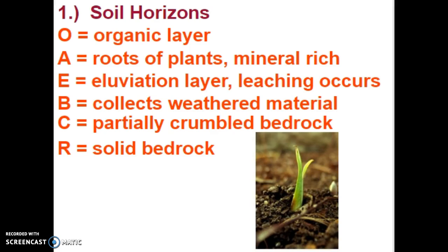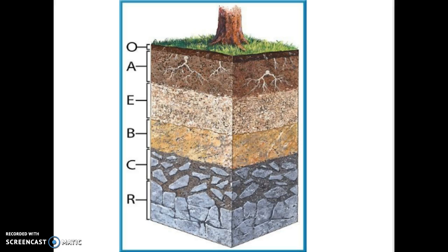The B layer collects weathered material, so we have larger sediments here — probably sand or gravel sized. The C layer has partially crumbled bedrock; you can remember C for crumbles. Most of the rock here is split into very large chunks of gravel, boulder, or cobble size. At the very bottom, if you dig down far enough, you will hit the R layer, which is solid bedrock. So the topsoil layers are O and A; the subsoil is E and B; and C and R are needed to build the subsoil, which in turn builds the topsoil.